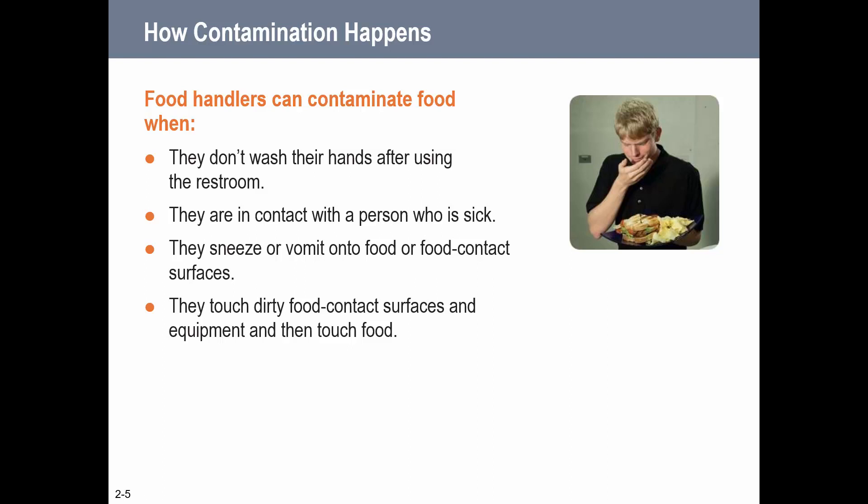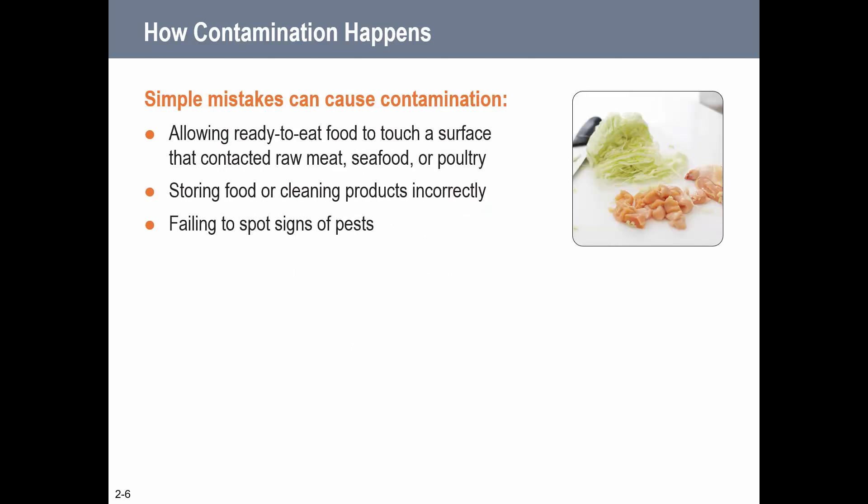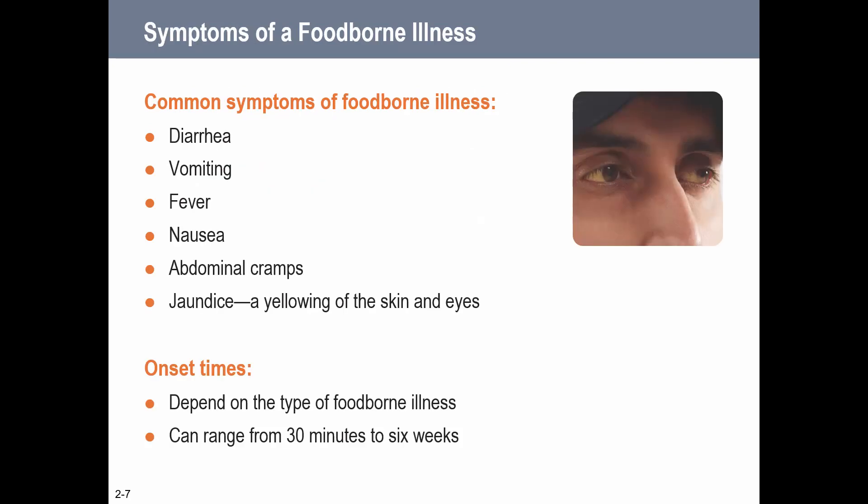How do we contaminate food? If you don't wash your hands after going to the bathroom, vomit on food contact surfaces, touch dirty equipment and then touch food, or come in contact with a sick person - all of those things can cause contamination. Simple mistakes can cause it too, like allowing ready-to-eat food to touch a surface that had contact with raw meat, storing food inappropriately, or not seeing signs of pests - because pests can spread disease to our food.